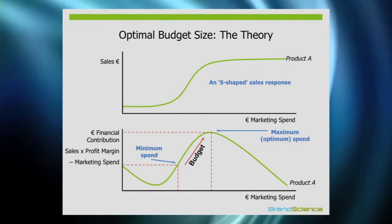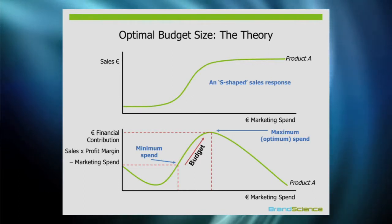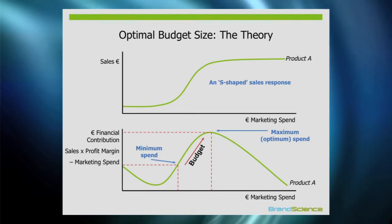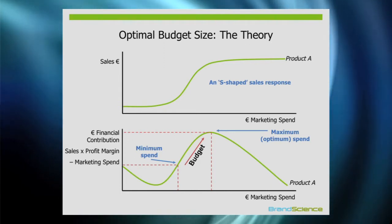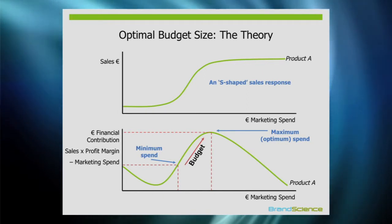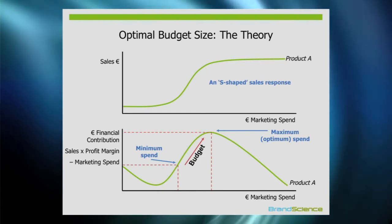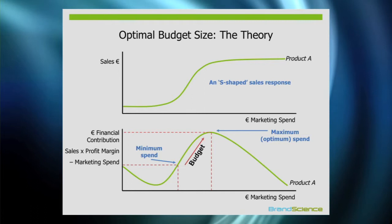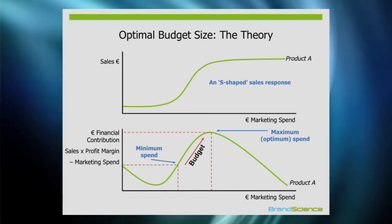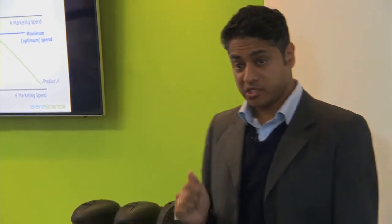Here are some interesting numbers from the UK. Six percent of brands are to the right-hand side of that optimal point — they're overspending, and the advice is to cut their budget. About fourteen percent of brands are underspending below the minimum — that's the worst place to be, you're just burning money. Eighty percent of brands, especially looking at long-term effects, are between the minimum and the maximum, and there is an opportunity to spend more and realize more on the bottom line.